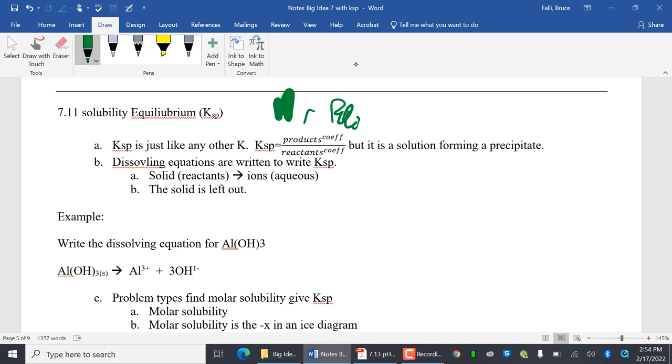So we're going to start with KSP, and what's nice about all of these things is all of these are the same thing. So KSP is just like any other K, products over reactants raised to coefficient, but it is a solution forming a precipitate, or really it's the dissolving equation. So dissolving equations are written to write KSP. So we have a solid that turns into ions. So my example, I have aluminum hydroxide that turns into ions. Notice how I have to balance it. There's my dissolving equation for AlOH3. Notice these do matter, and you have to know the charges and your ions.